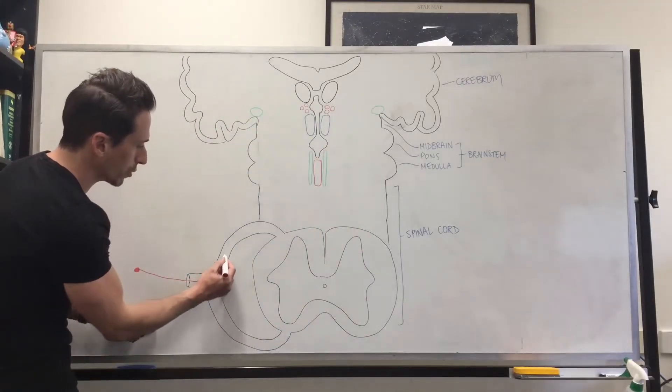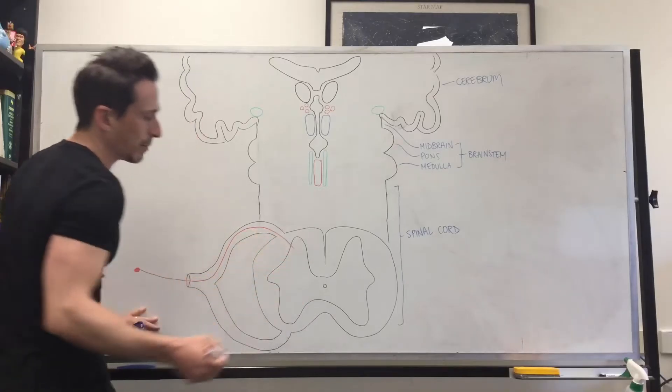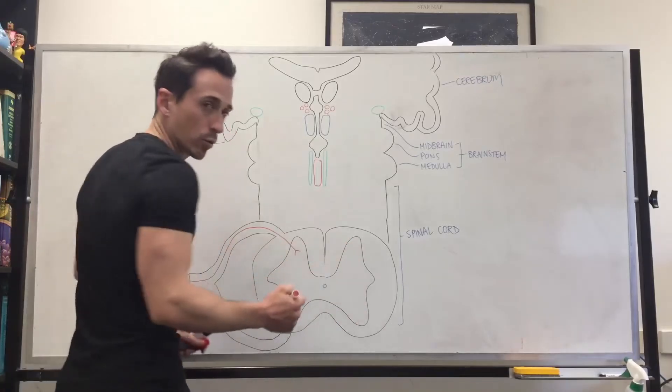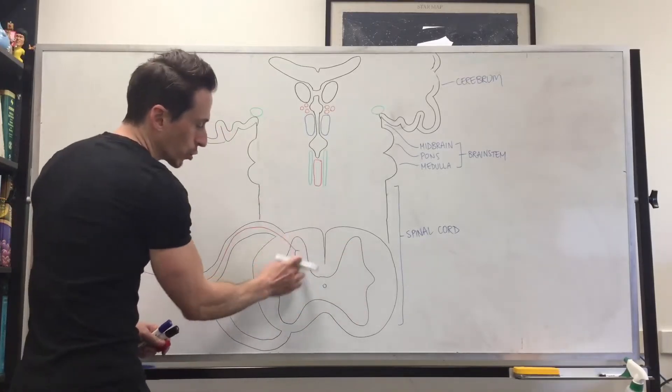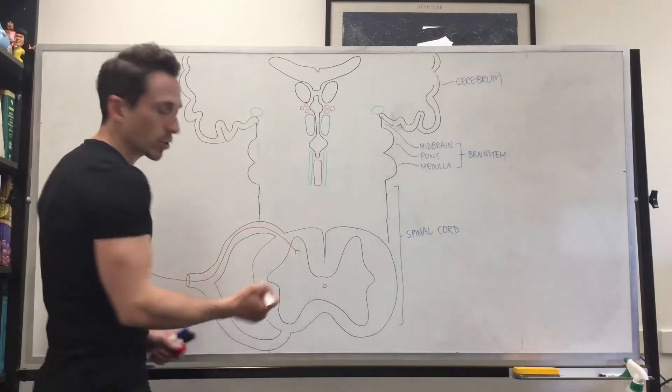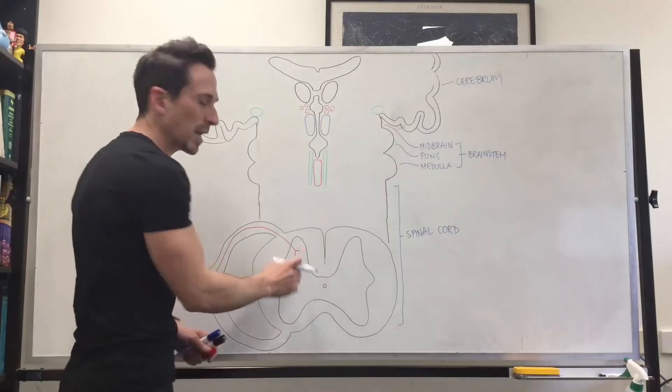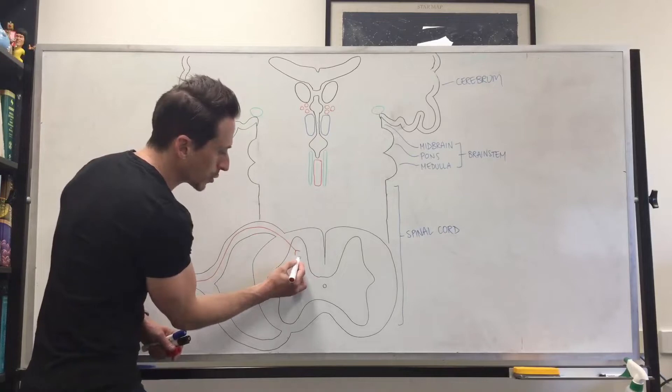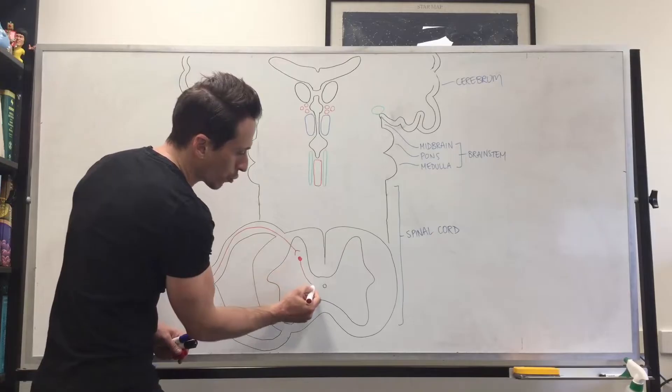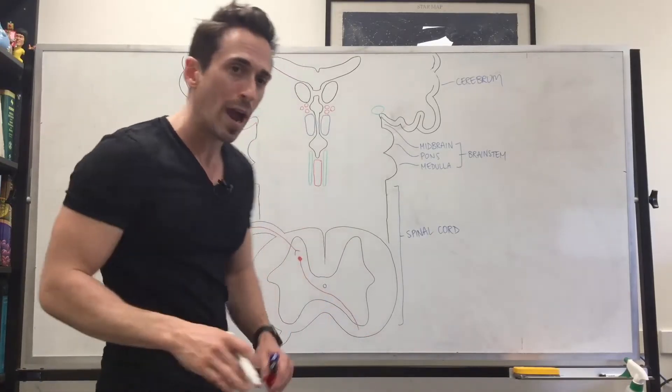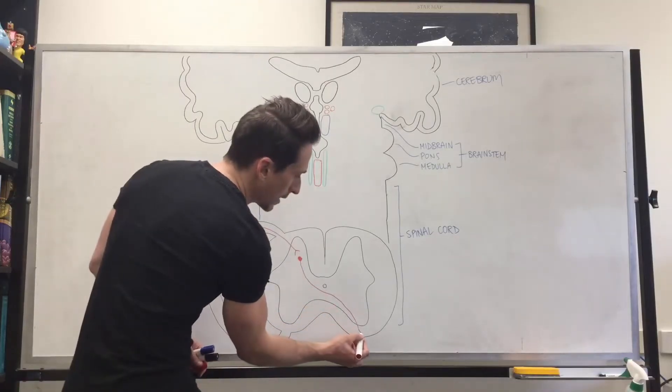It goes to the dorsal nerve root. It goes in and it synapses at the gray horn of the spinal cord. So dorsal gray horn, ventral gray horn, lateral gray horn. So it synapses here at the dorsal gray horn, specifically at an area called the substantia gelatinosa. I won't write it down, but I'll talk about some other ones in a second. It synapses with the second neuron here. This second neuron then decussates or crosses over to the other side, goes into this bit of white matter here called the spinothalamic tract, and it ascends up the spinal cord.